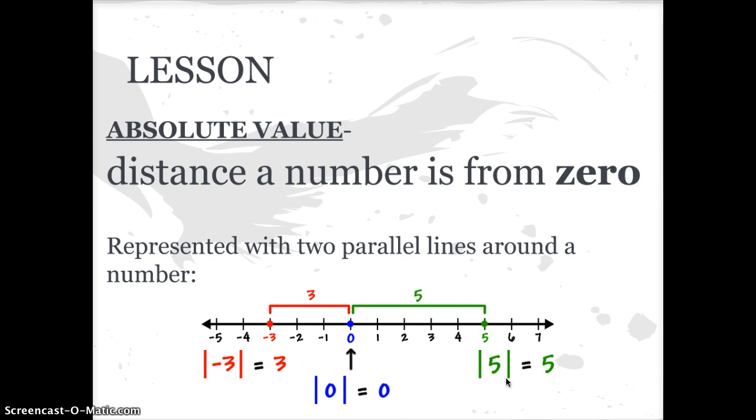The absolute value of five is five. And the absolute value of zero—zero is zero units away from zero. So the absolute value of zero is zero. So that's absolute value.